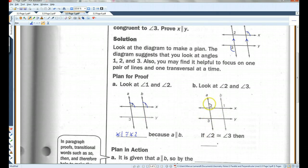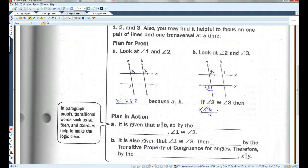Now, if angle 2 is congruent to angle 3, then X has to be parallel to Y because these are alternate exterior angles. So, it is given that A is parallel to B, so by the corresponding angles postulate.